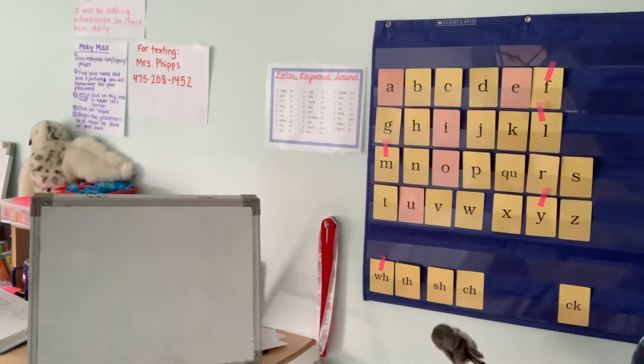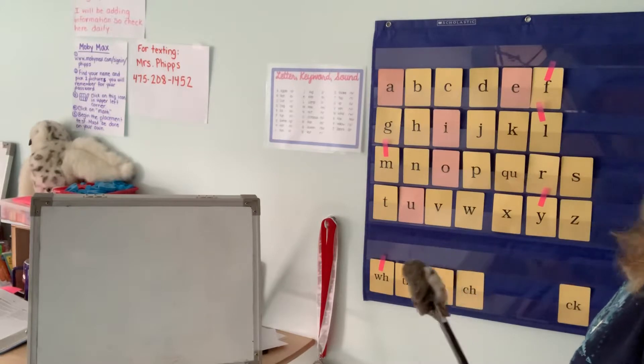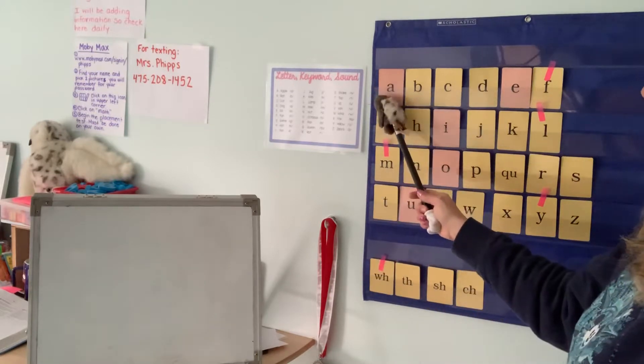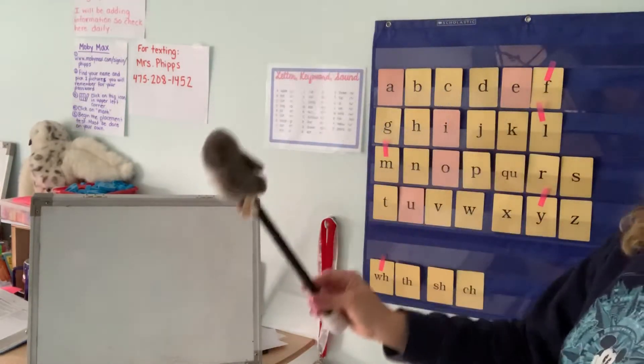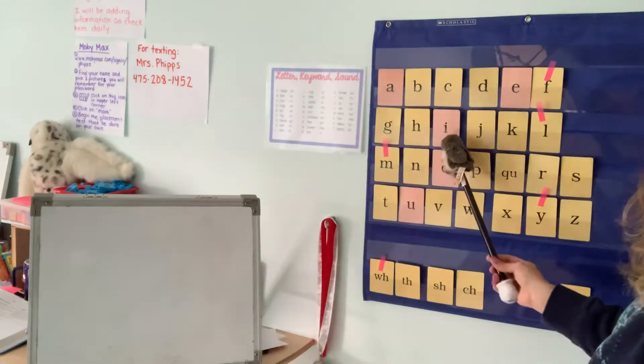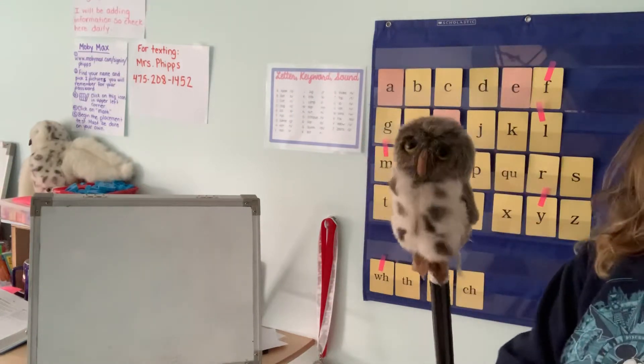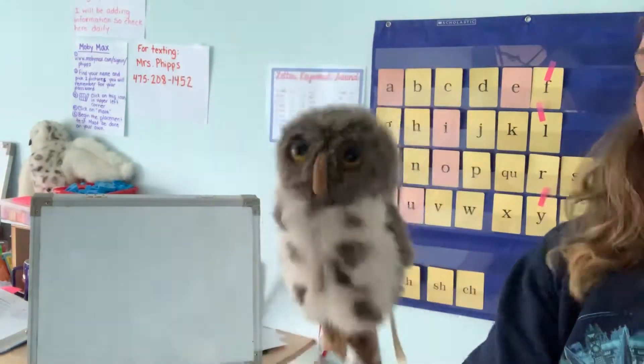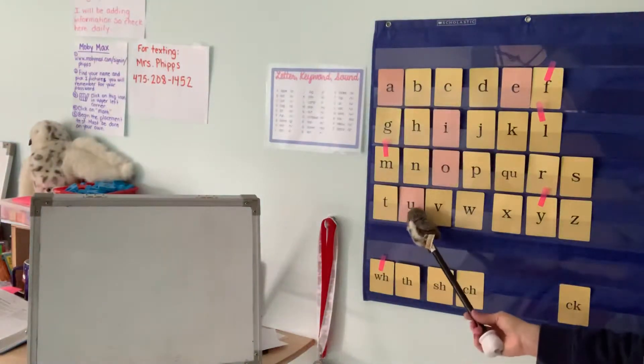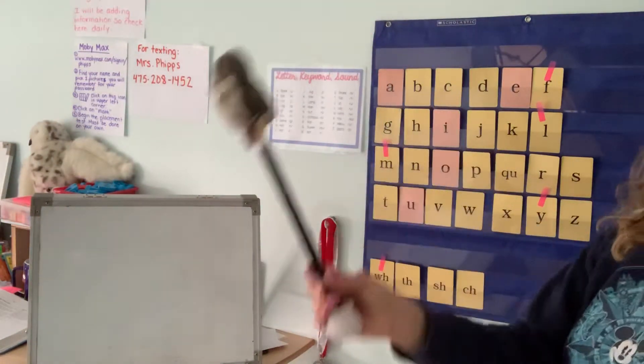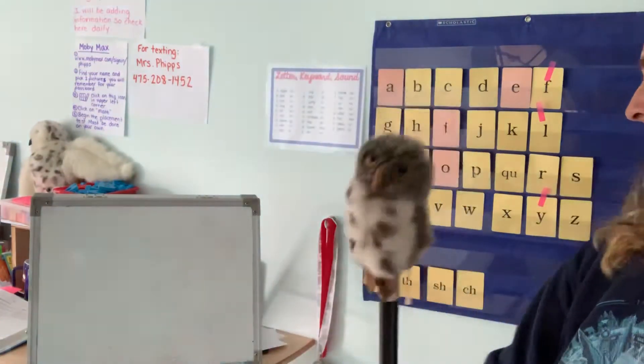Good job. Now let's do our vowels. A, apple. E, egg. I, itch. O, octopus. U, up. Good job.